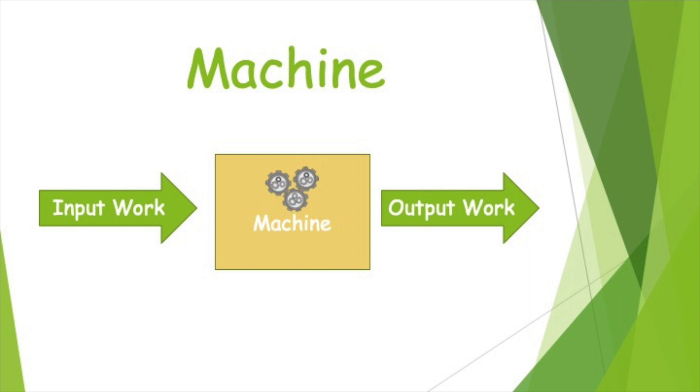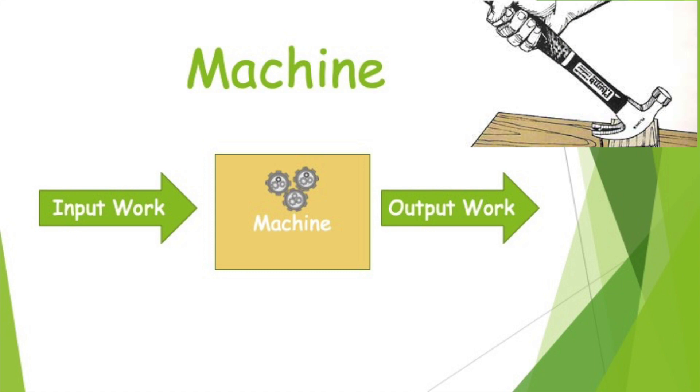this machine was a hammer. I'll just make it something really simple. And you want to pull a nail out with a claw hammer. And so you grab the handle and you pull back on the handle. That's your input work. The claw part of the hammer, which is hooked onto the nail, pulls the nail out. That's the output work. So the hammer is the machine.